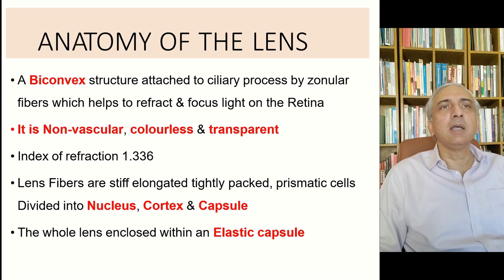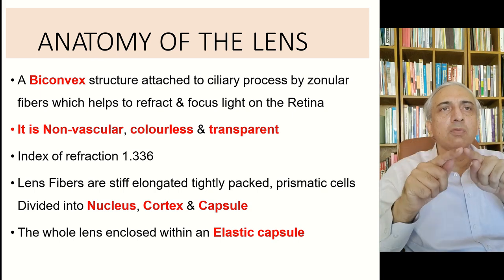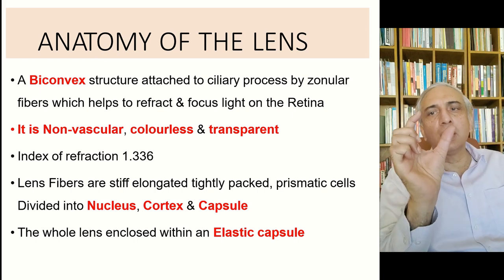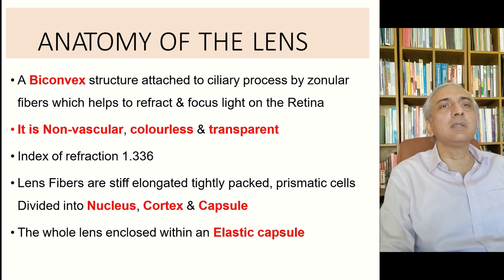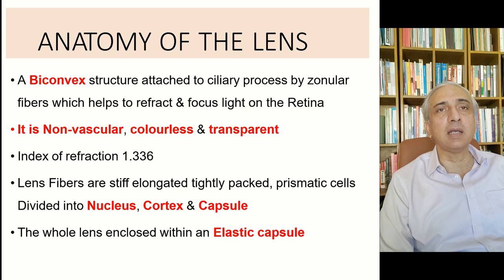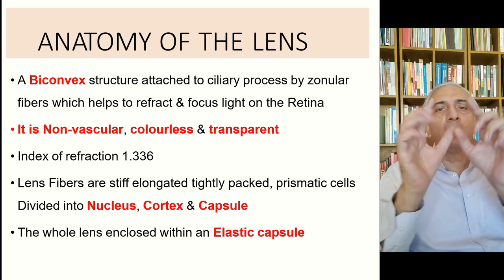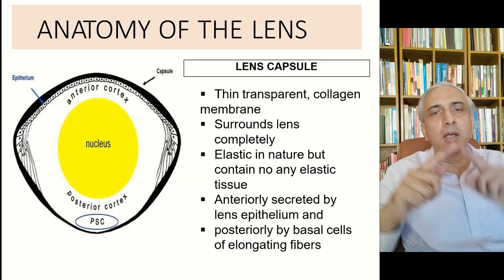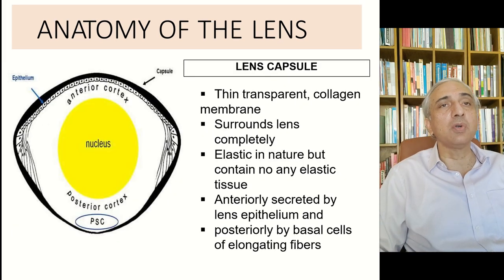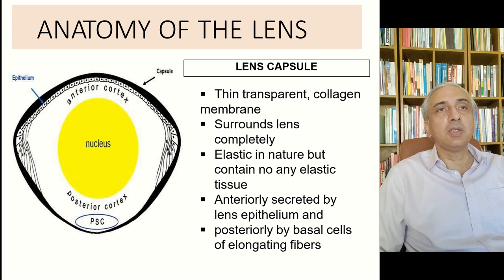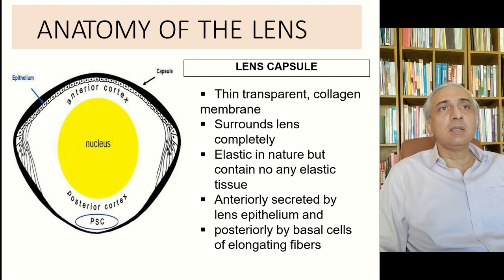The lens fibers are stiff, elongated, tightly packed prismatic cells. They are divided into the central core, which is the nucleus, topped by the cortex, and surrounded by the capsule. The whole lens capsule is elastic, which allows the lens to become thinner or thicker in size — it can change its shape.